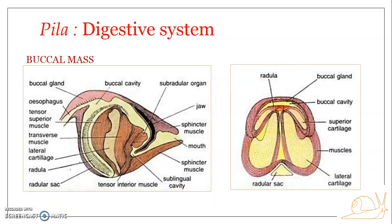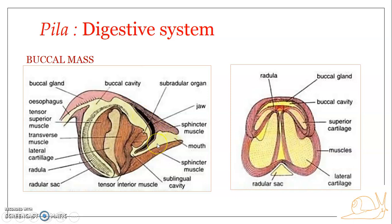The buccal cavity is differentiated into an anterior smaller tubular part referred to as the vestibule, and a posterior portion. The posterior part of the vestibule is provided with a pair of thickened jaws, which are dorsolaterally positioned — one on each side.